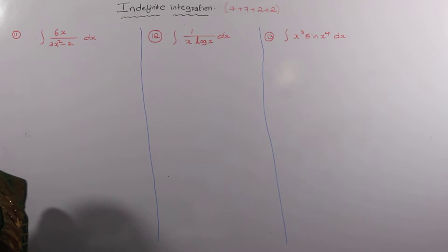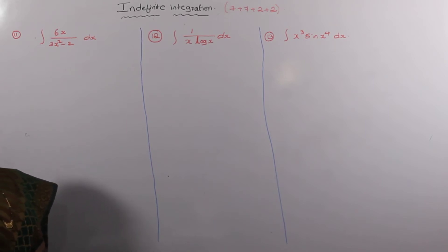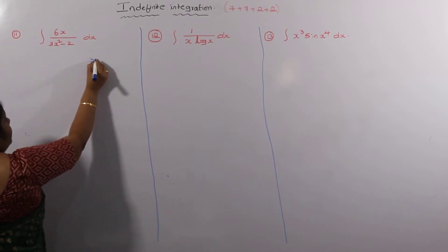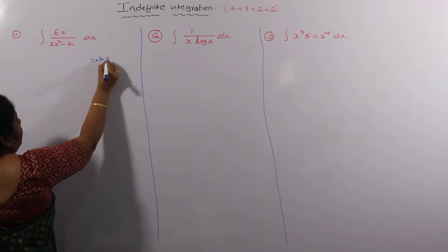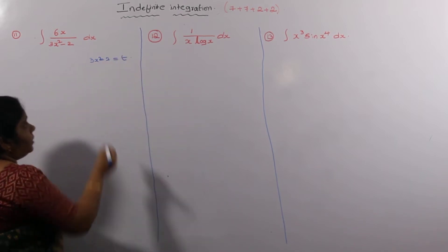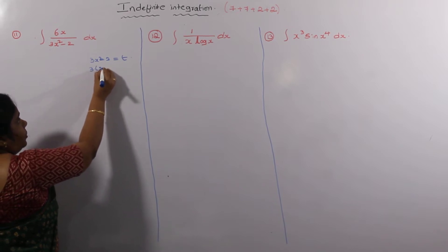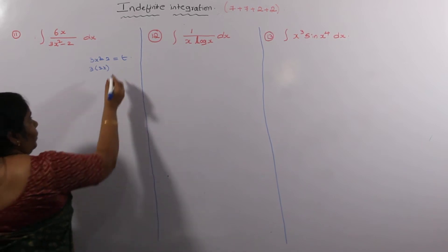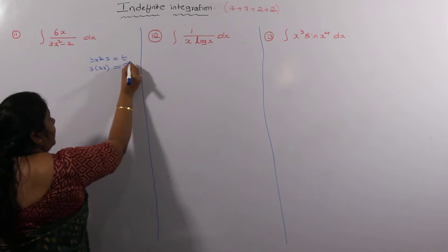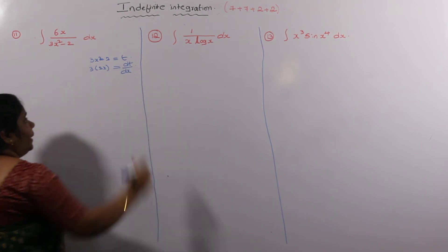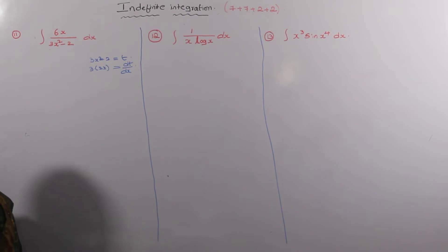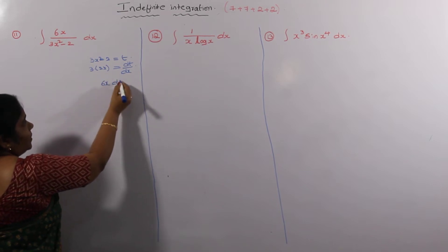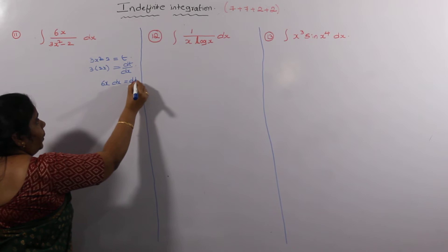What we have: the differentiation part is stated as T. What is T here? 3x² - 2 is stated as T. Differentiation of 3x² gives 6x, and differentiation of the constant -2 is 0. So differentiation of T with respect to x is dT/dx, which implies 6x dx is equal to dT.